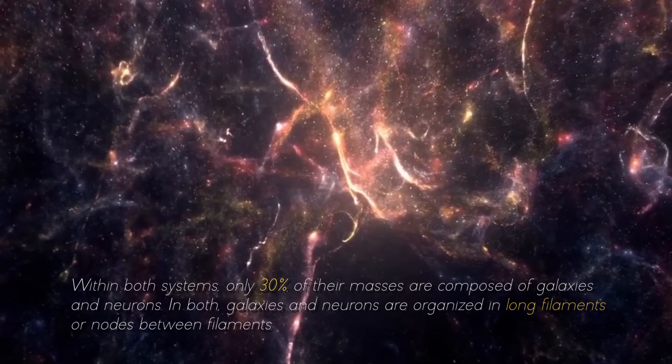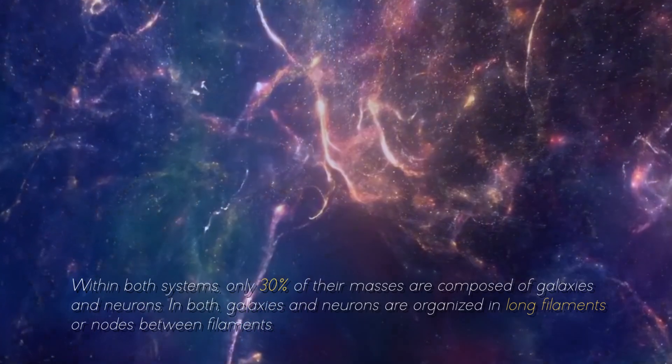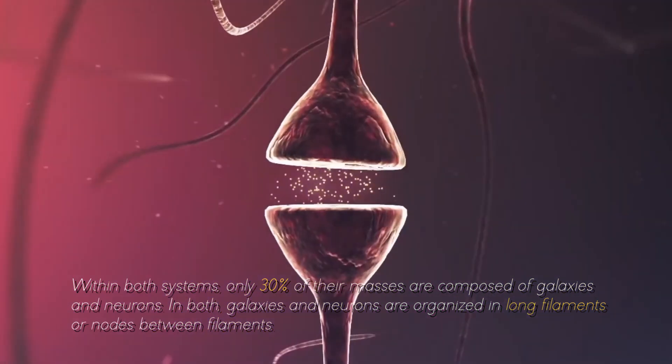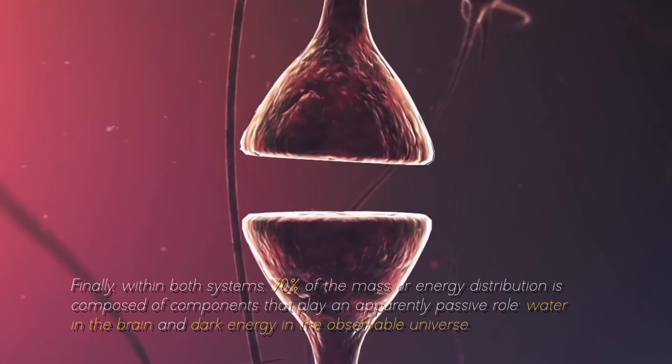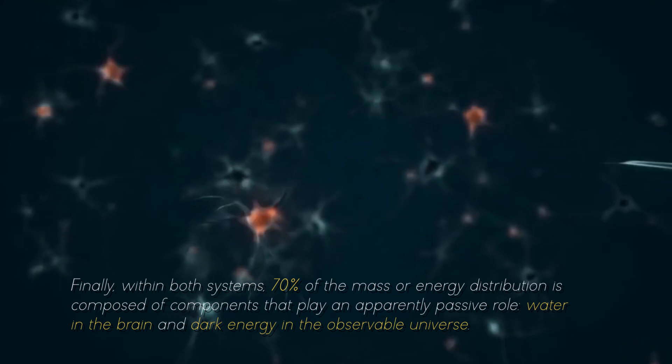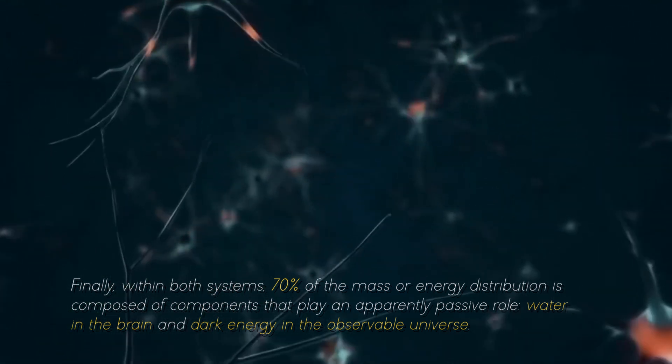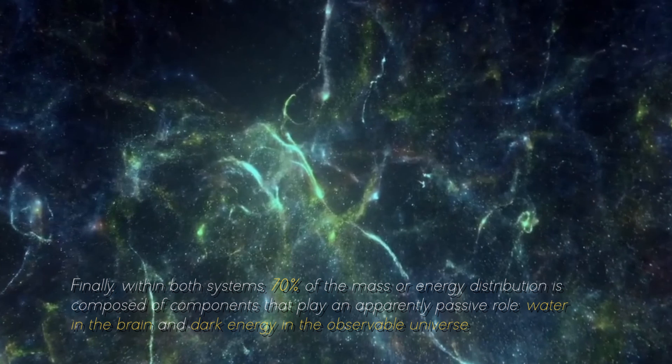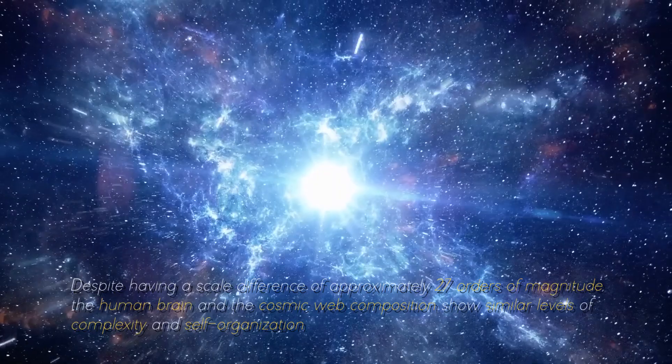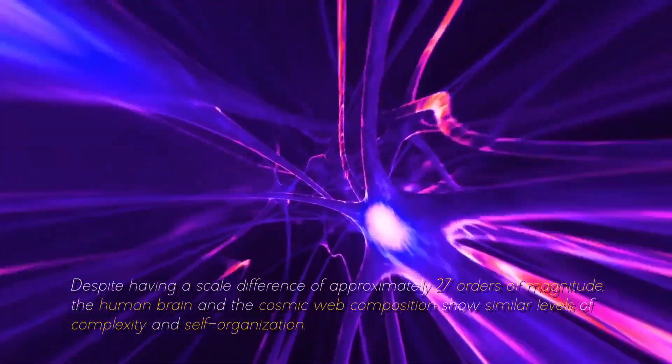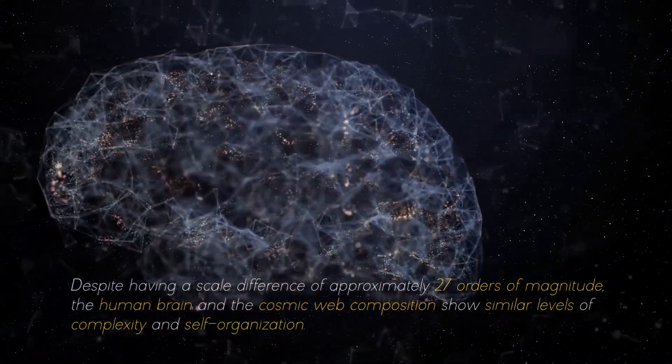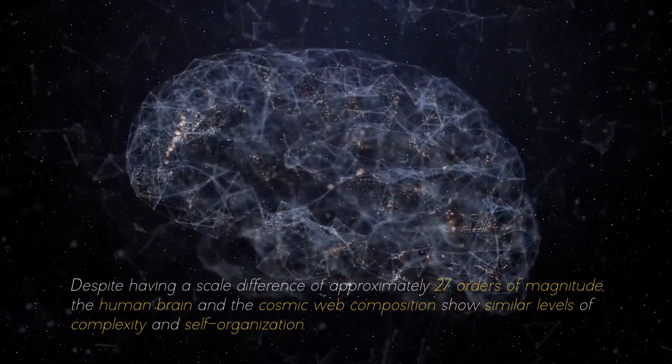Within both systems, only 30% of the masses are composed of galaxies and neurons. In both, galaxies and neurons are organized in long filaments and nodes between filaments. Finally, within both systems, 70% of the mass or energy distribution is composed of components that play an apparently passive role, water in the brain and dark energy in the observable universe. Despite having a scale difference of approximately 7 orders of magnitude, the brain and the cosmic web composition show similar levels of complexity and self-organization.